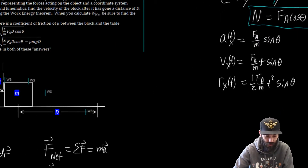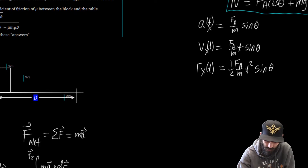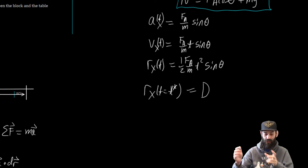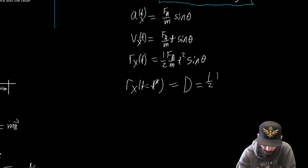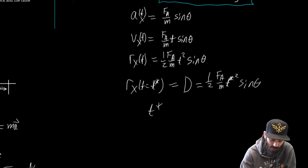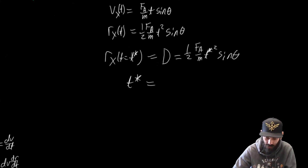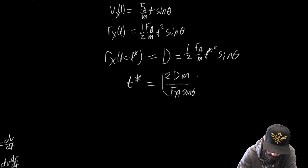We want to find the amount of time it takes to go this distance D. We take our position function and say that at some very specific time t*, x(t*) is equal to D — so t* is the amount of time it takes to get to distance D. This is going to be equal to one-half (F_A over M) t*² times sine of theta. Solving for t*, this is going to be (2DM divided by F_A times sine of theta) to the one-half.